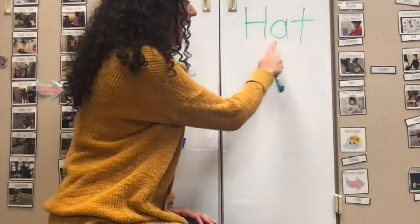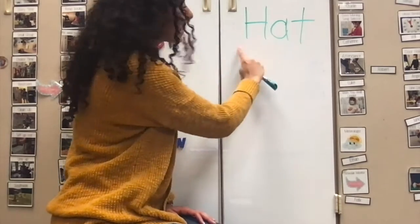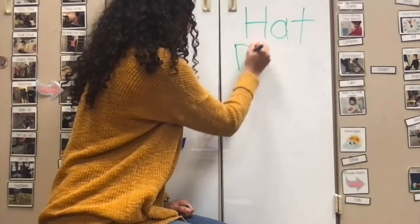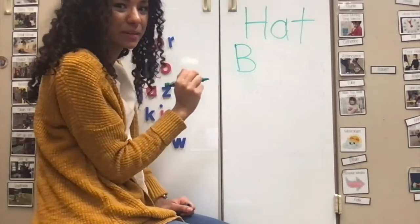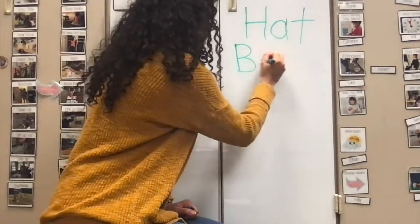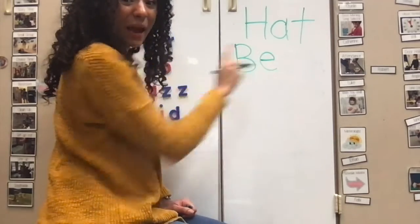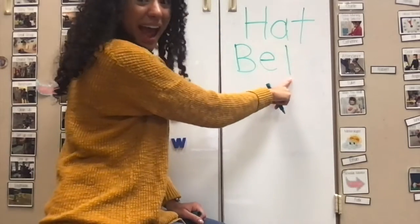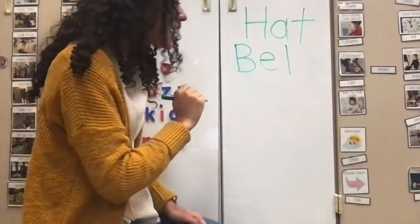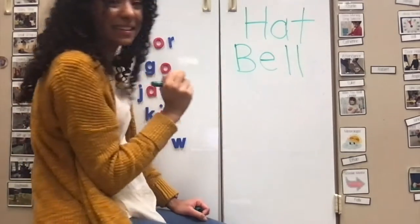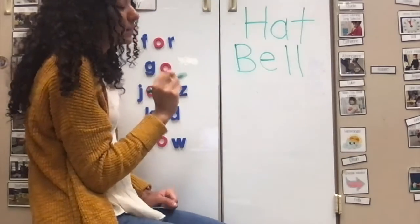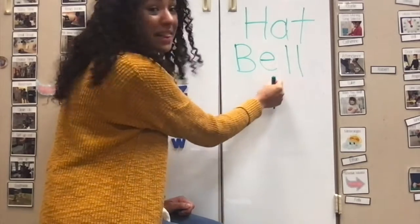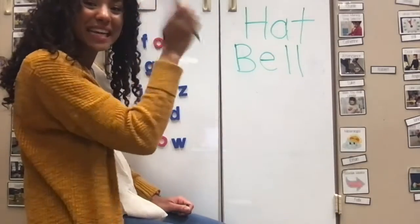So let's see, it says H-A-T. Hat. Like a hat you wear on your head. Let's go on to the next one. What letter is this? B. What sound does it make? B-B-B. What letter is this? E. What sound does it make? A-A-A. What letter is this? L. What sound does it make? L-L-L. Now let's sound it out. B-A-L-L. Bell. Ding, ding, ding. You've got it.